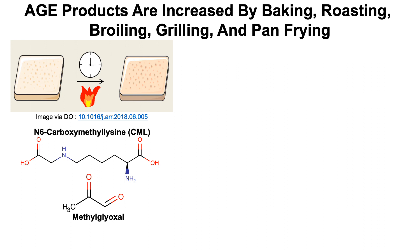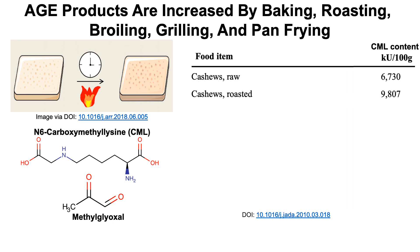Where are AGE products found in the diet? This shows CML — carboxymethyl lysine — content in a few different foods, illustrating how cooking foods at a temperature higher than 100 degrees Celsius, or 212 degrees Fahrenheit — anything higher than boiling temperature — will create more AGE products. Looking at raw cashews, the CML content is 6,730 kilounits per 100 grams, but roasting results in a greater formation of AGE products, around 3,000 additional units.